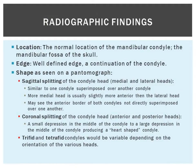Moving on to radiographic findings — first, location. As it is just an extension of the condylar head, the location is the normal location of the mandibular condyle, which is the mandibular fossa of the skull. As it is just an extension of the condyle, it looks like bone and has a well-defined edge.